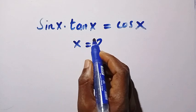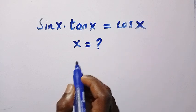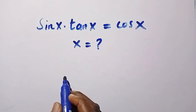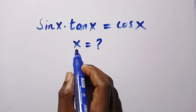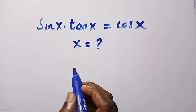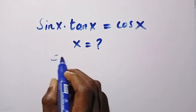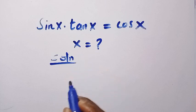We have sin x multiplied by tan x equals cos x. And what is the value of x? So here we have x as a member of real numbers. So let's see how we solve this for the value of x, or let's say all the values of x.